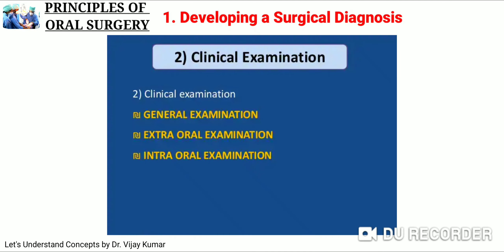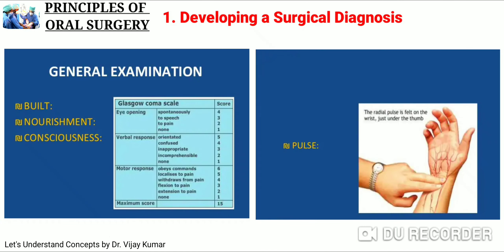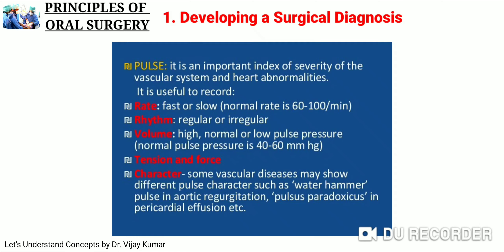In clinical examination, we check general, extraoral, and intraoral. In general, we check build, gait, nourishment, and consciousness. For head injury or facial trauma, we check the Glasgow Coma Scale. We also check pulse, blood pressure, respiratory rate, cyanosis, and pallor. For pulse, we check rate, rhythm, volume, tension, force, and character.